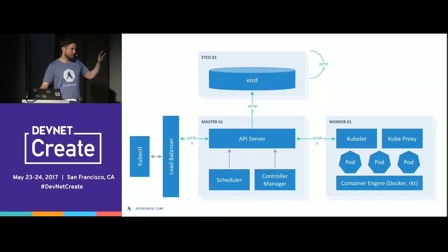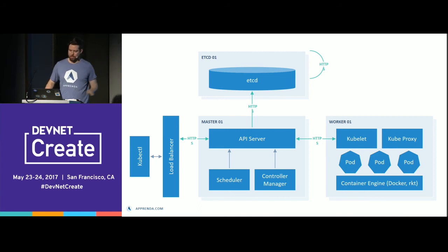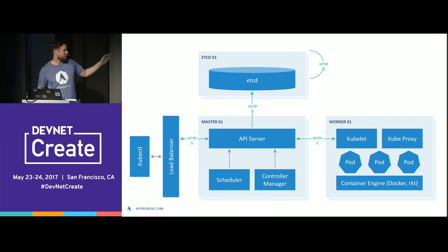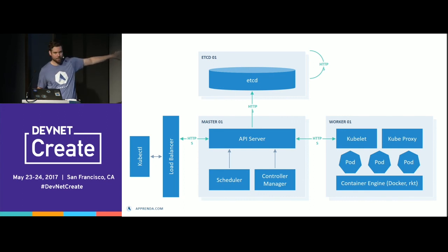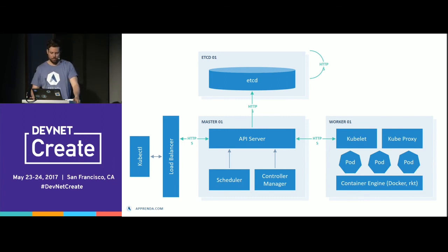So those are the different components of Kubernetes — the etcd nodes, the master nodes, and the worker nodes. You also have load balancers and the command line, which is called kubectl. Don't let anybody tell you it's pronounced differently — it's called kubectl.